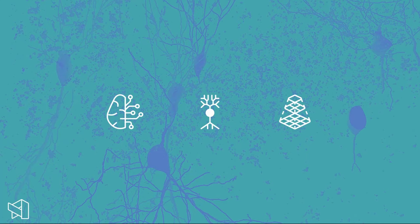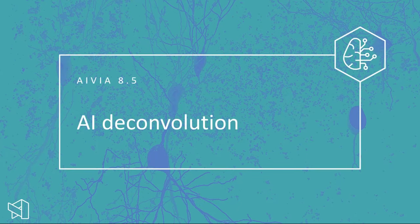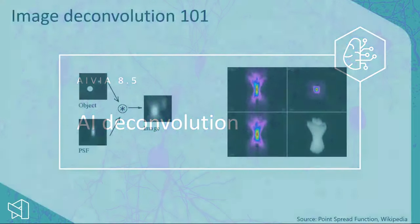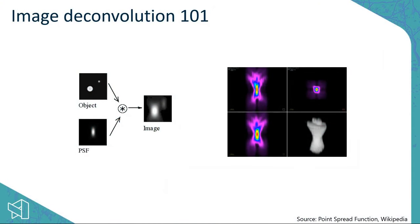I'll be talking about image deconvolution using deep learning, then predictive neuron tracing, and finally rendering and analyzing very large data sets. First, we'll talk about AI deconvolution — specifically deep learning-powered image deconvolution. But before we get to that, let's take a step back and look at what the standard way of doing deconvolution currently is.